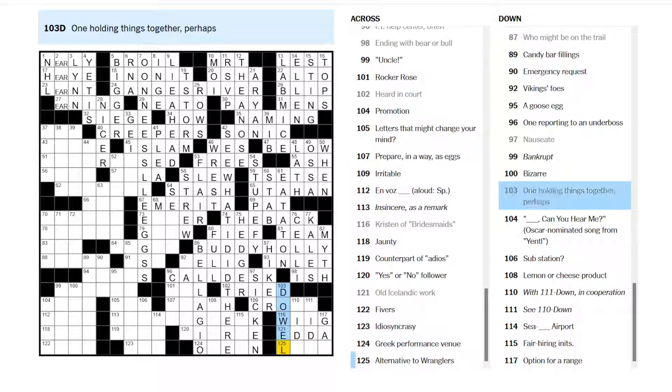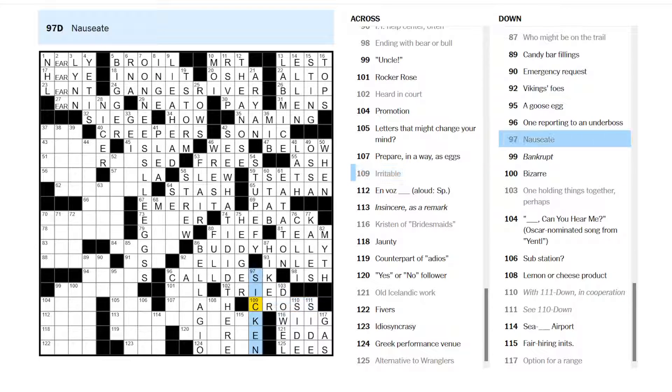Old Icelandic work is an edda. A dowel, maybe? I'll turn this to Wranglers. Jeep Wranglers. Jeep Wranglers? Option for a range. Maybe not. I'm not sure. Side by side. Okay. Oh, the jeans. It is a dowel, I guess. Cross is irritable. Okay. Rocker Rose is Axel Rose. Of Guns N' Roses.